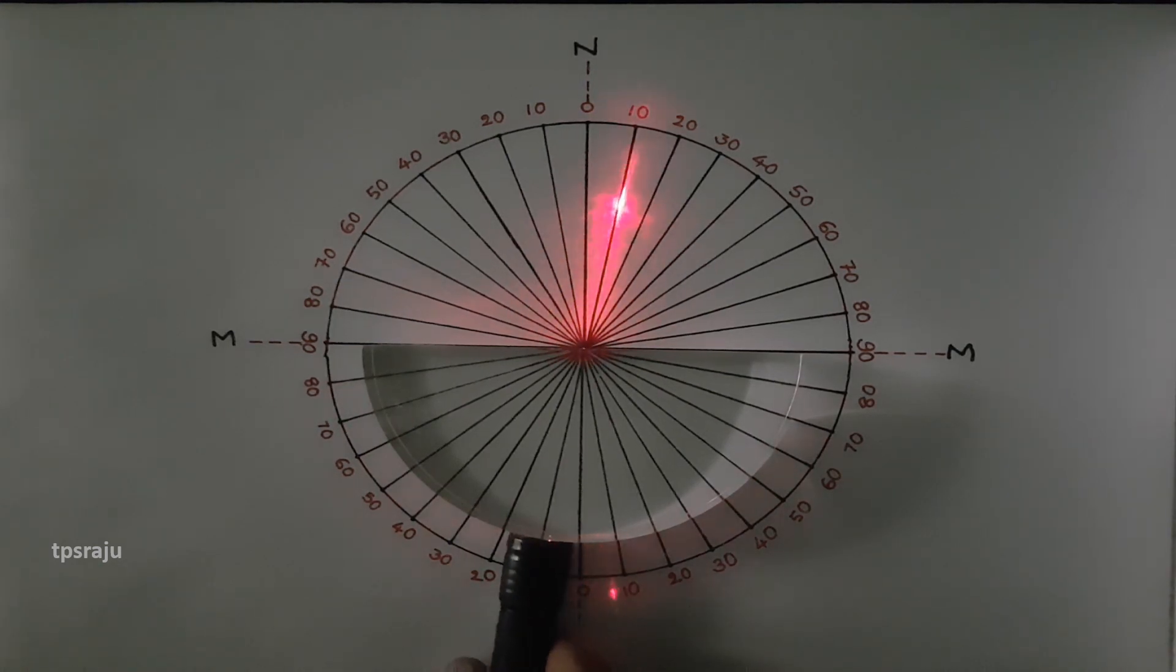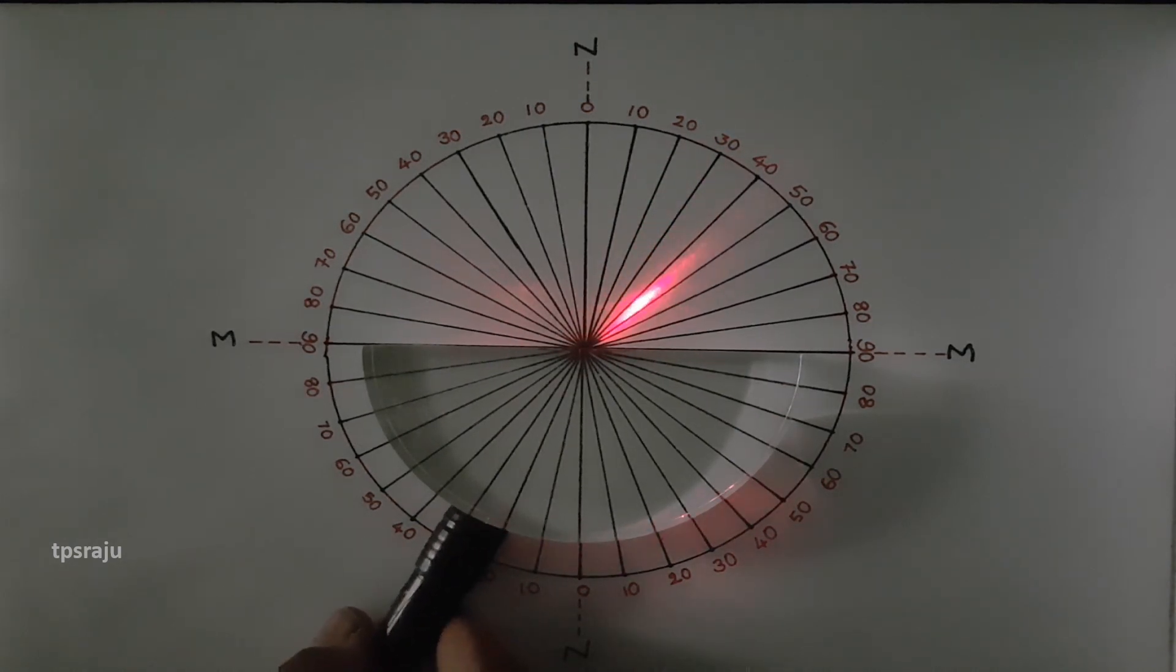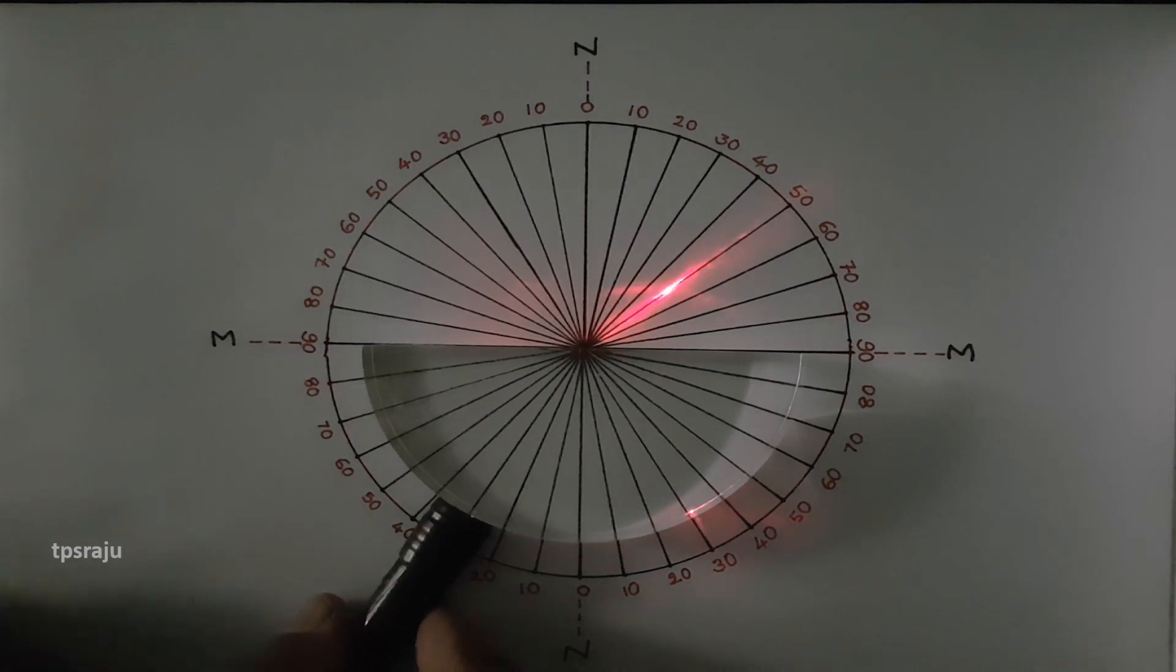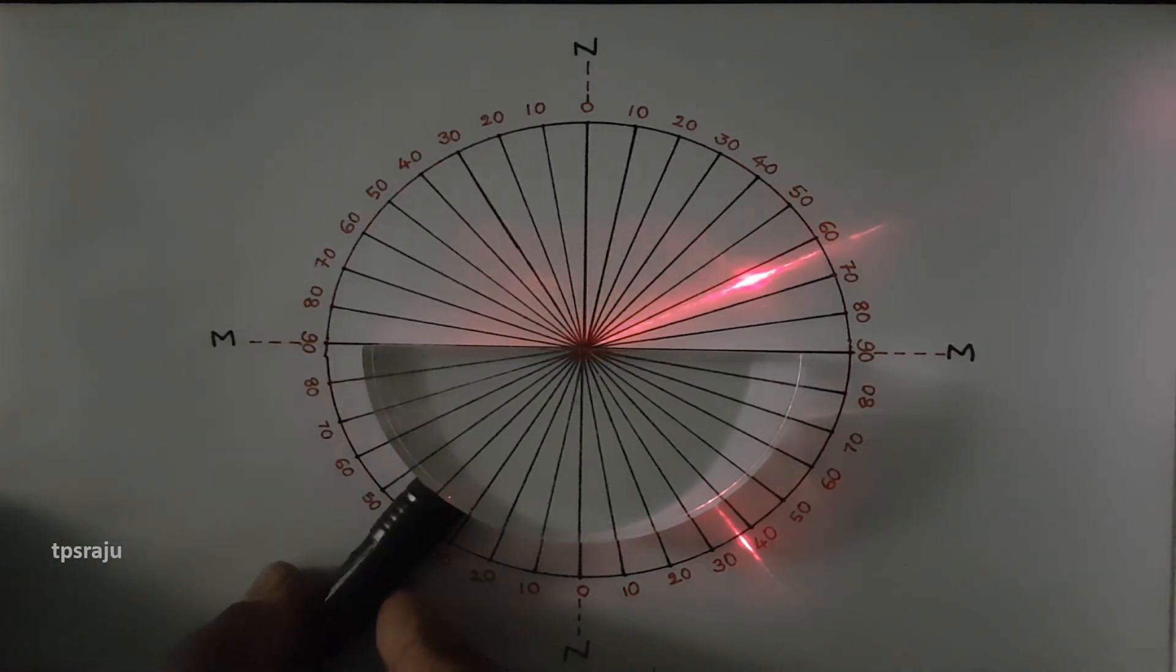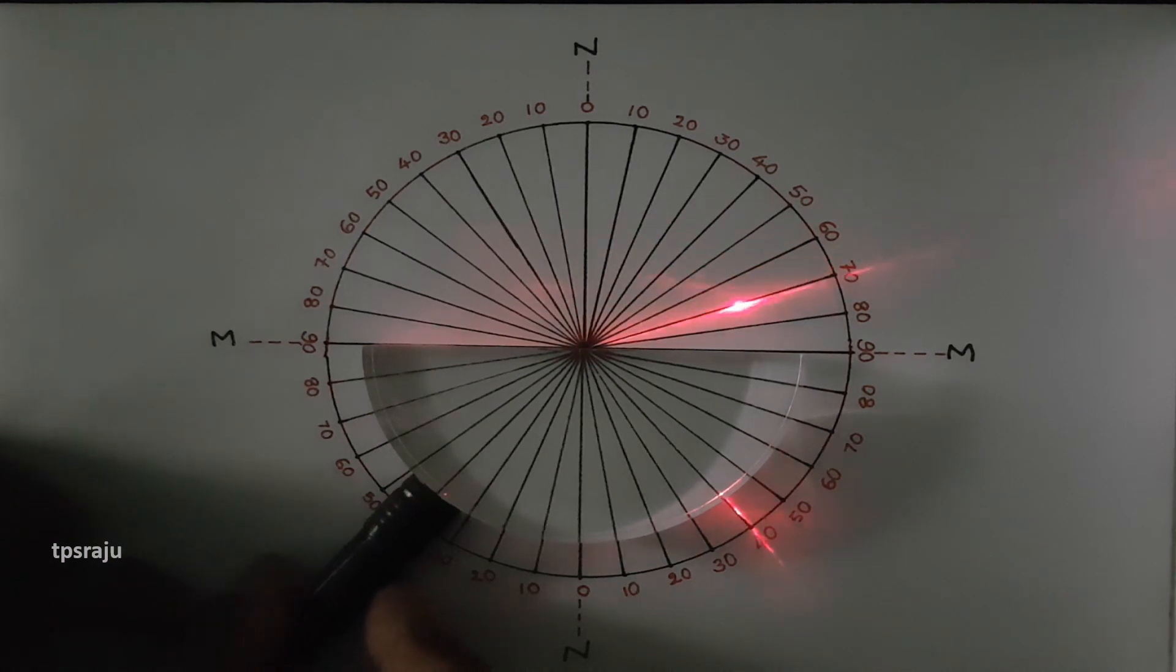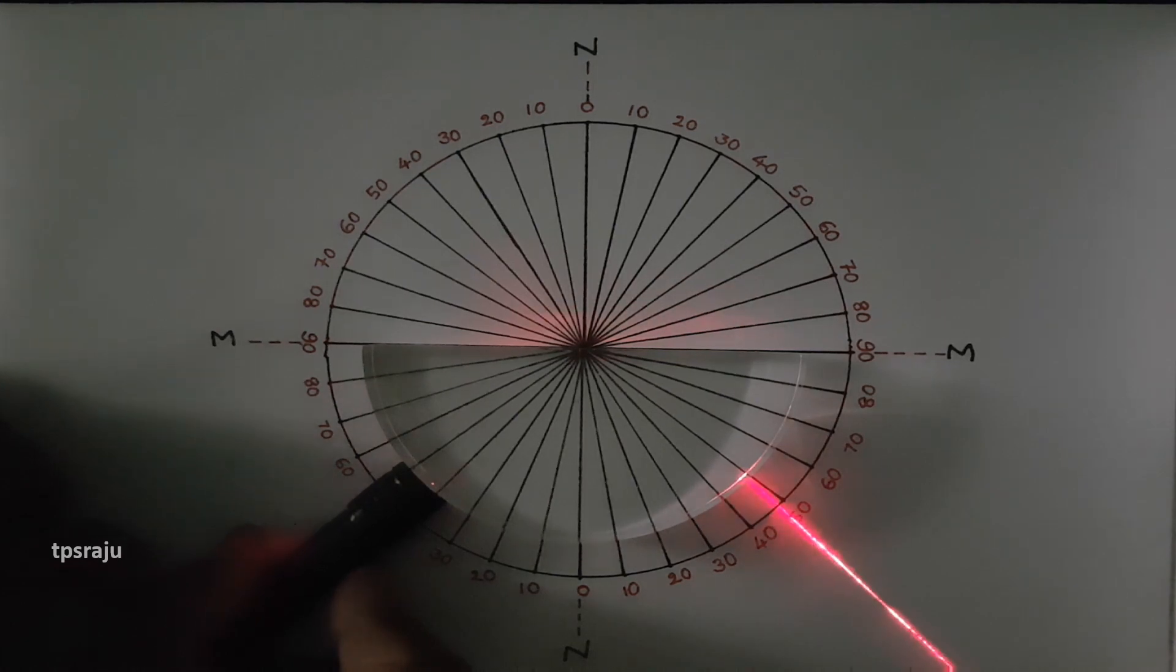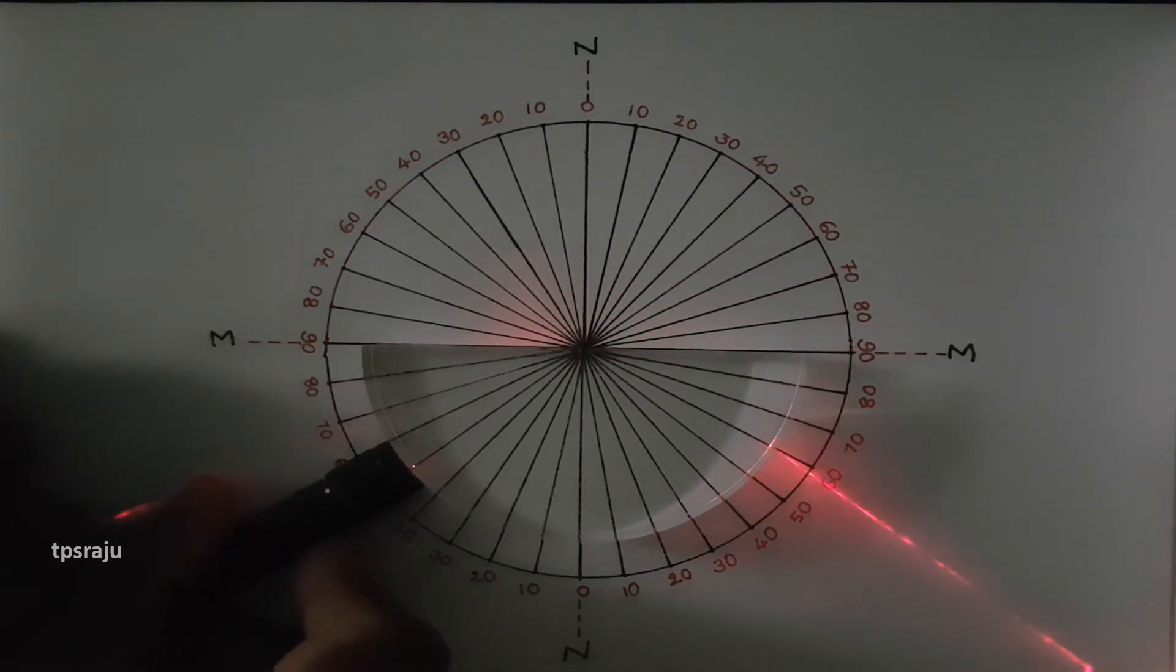Let us observe carefully. When we increase the angle of incidence, the refracted angle also increases respectively. But at certain angle of incidence, the refracted ray grazes the interface of the glass and air. After that refraction does not take place, totally the light reflected into the denser medium. This phenomenon is called total internal reflection.